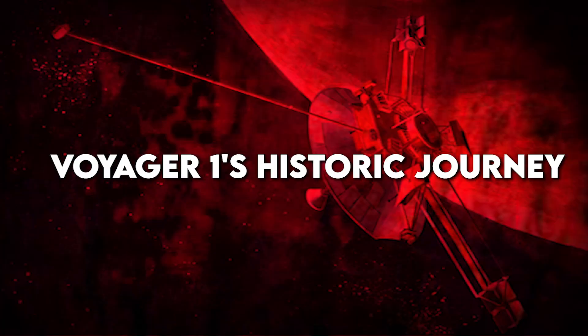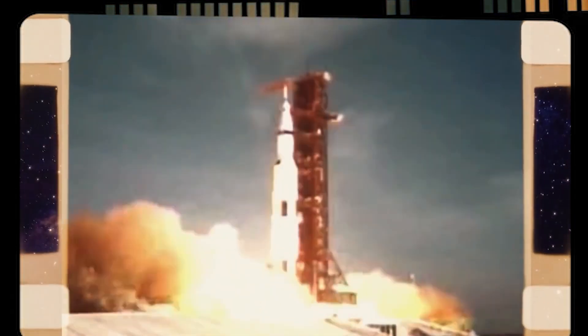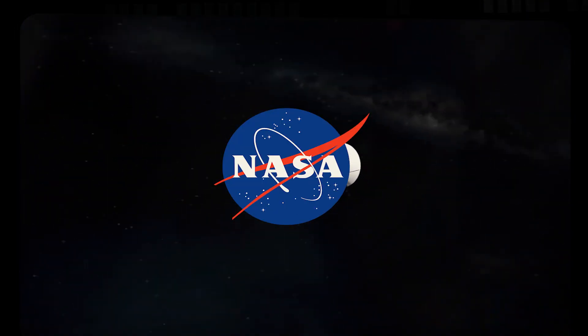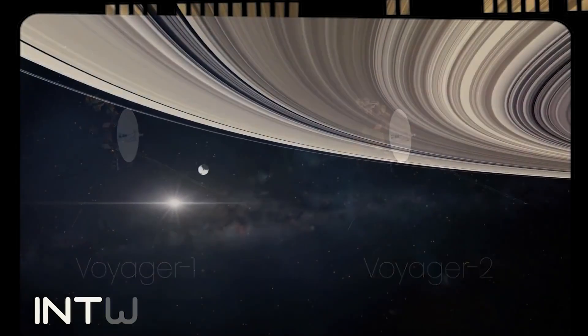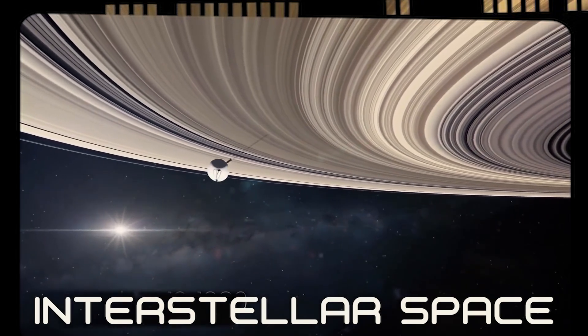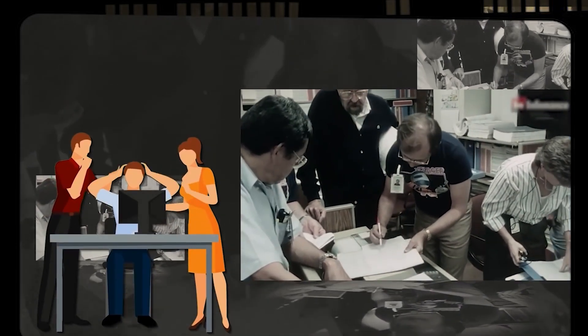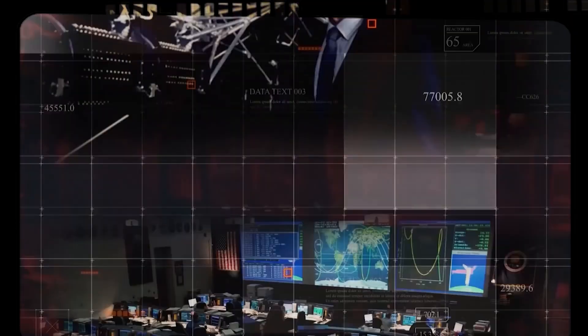Voyager 1's historic journey is a testament to the ingenuity and resilience of human exploration. Launched on September 5, 1977 as part of NASA's Voyager program, the spacecraft embarked on a mission initially focused on studying the outer planets, Jupiter and Saturn. Voyager 1's trajectory, meticulously calculated to utilize a rare planetary alignment, allowed it to slingshot from one giant planet to the next, maximizing the scientific data it could gather.